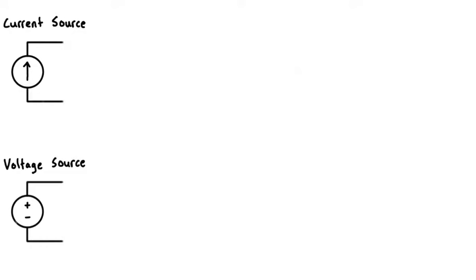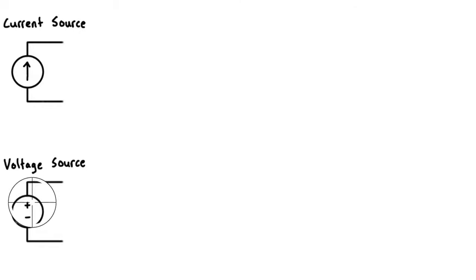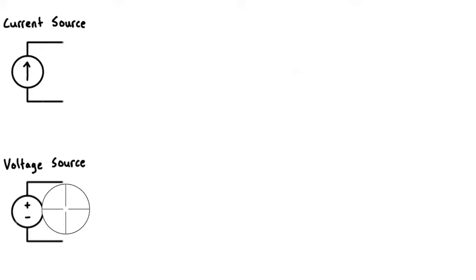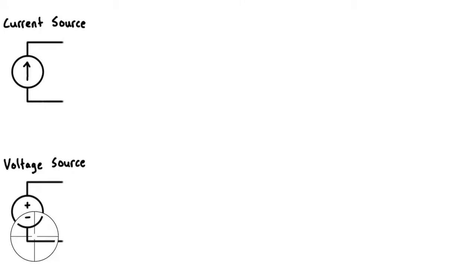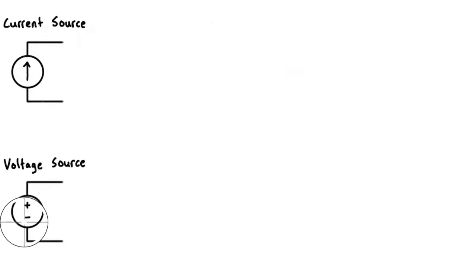Independent voltage sources — and these are ideal — what they do is they guarantee a certain amount of voltage difference between the terminals, and they'll use any amount of current to make sure that that happens. Say this is a nine volt battery; if you connect it to a resistor, depending on the resistance, it will force through as much current as necessary to ensure the positive terminal is nine volts higher than the negative terminal.